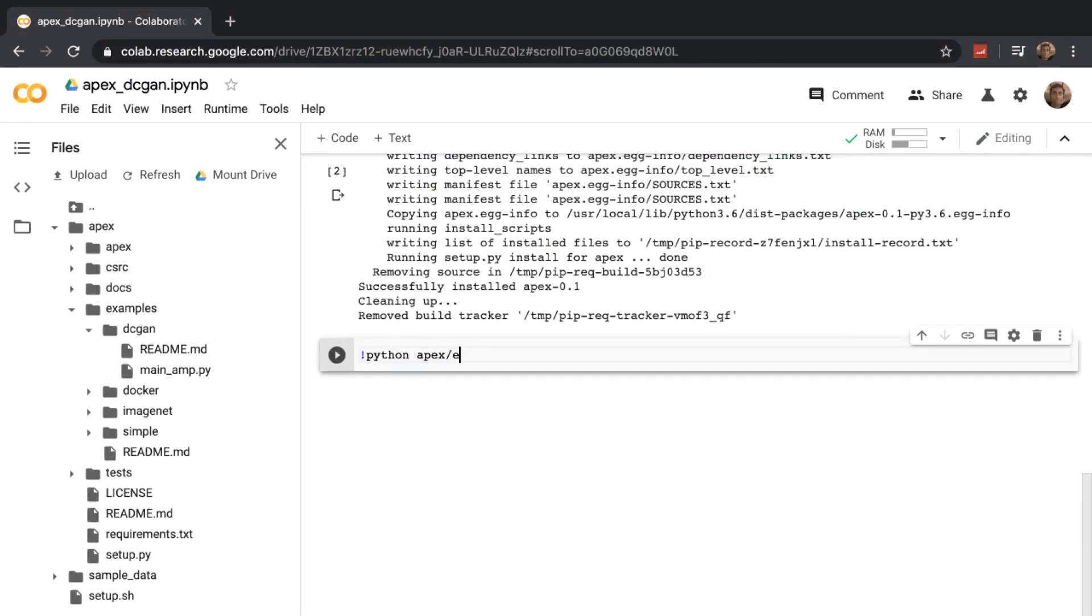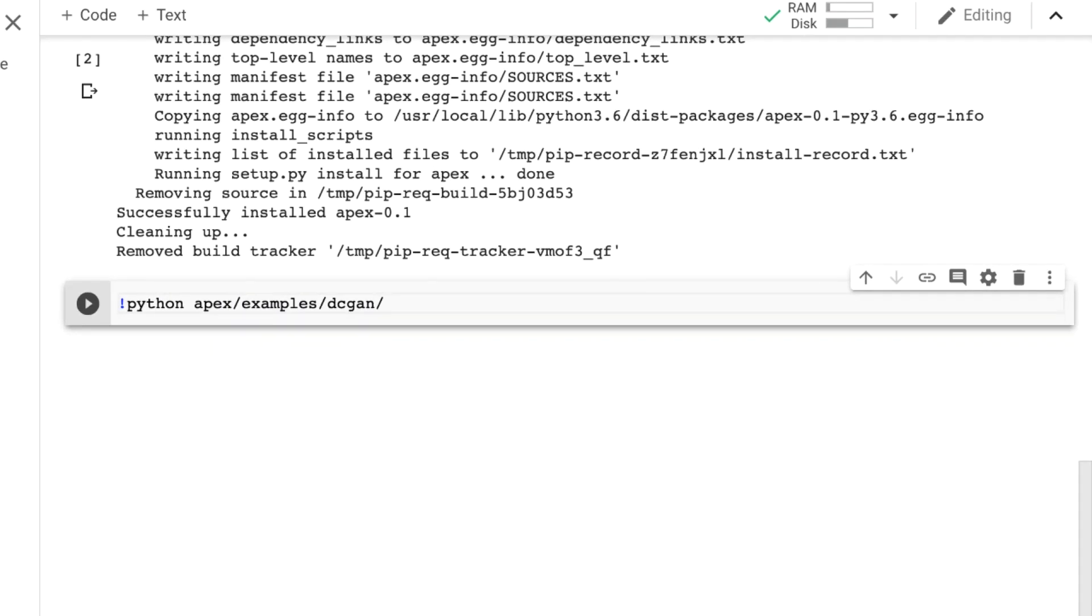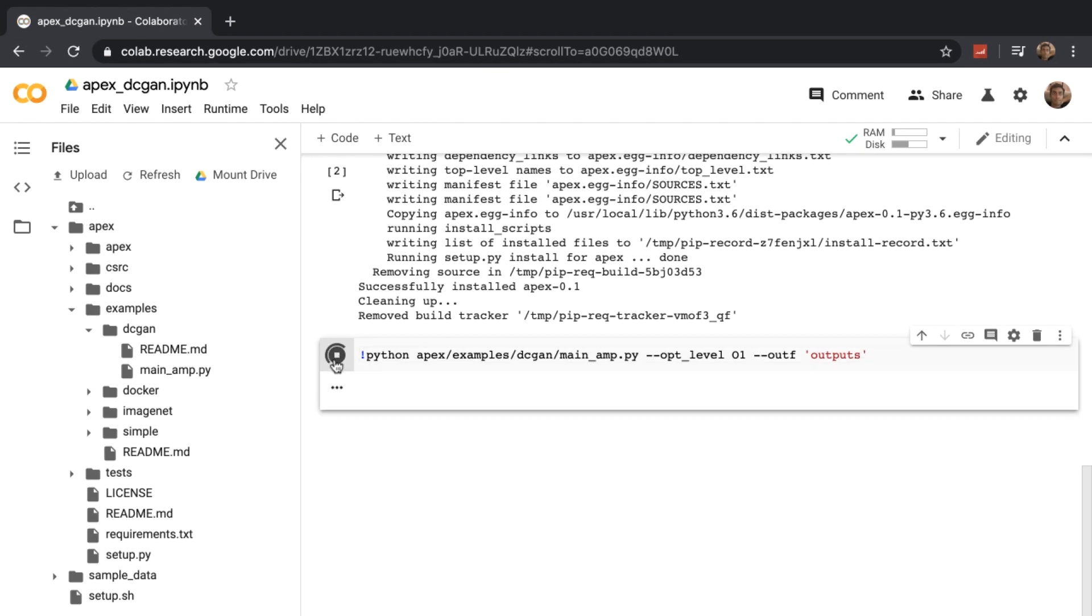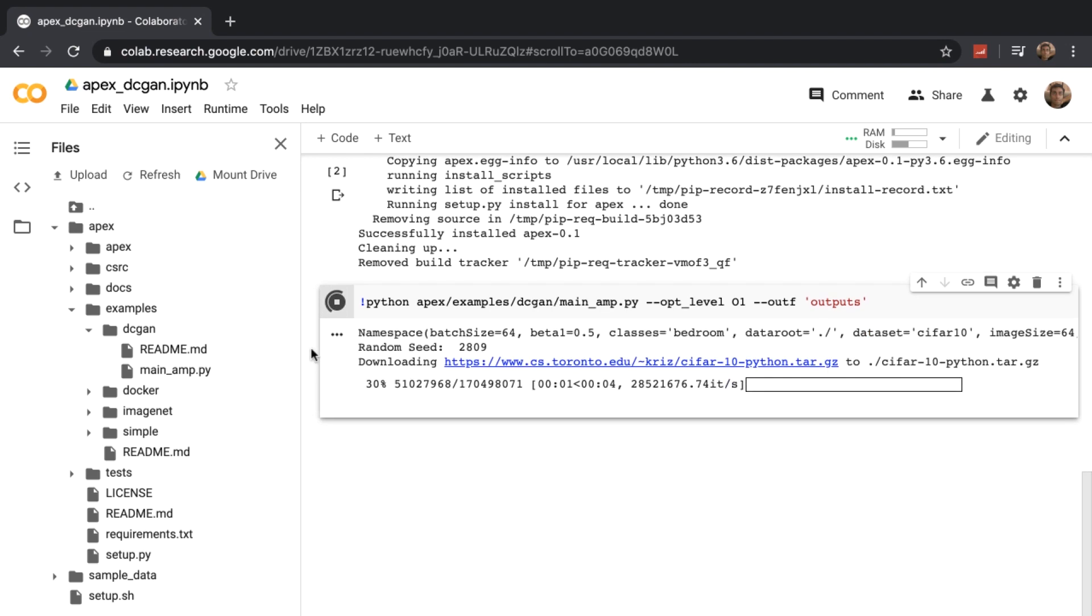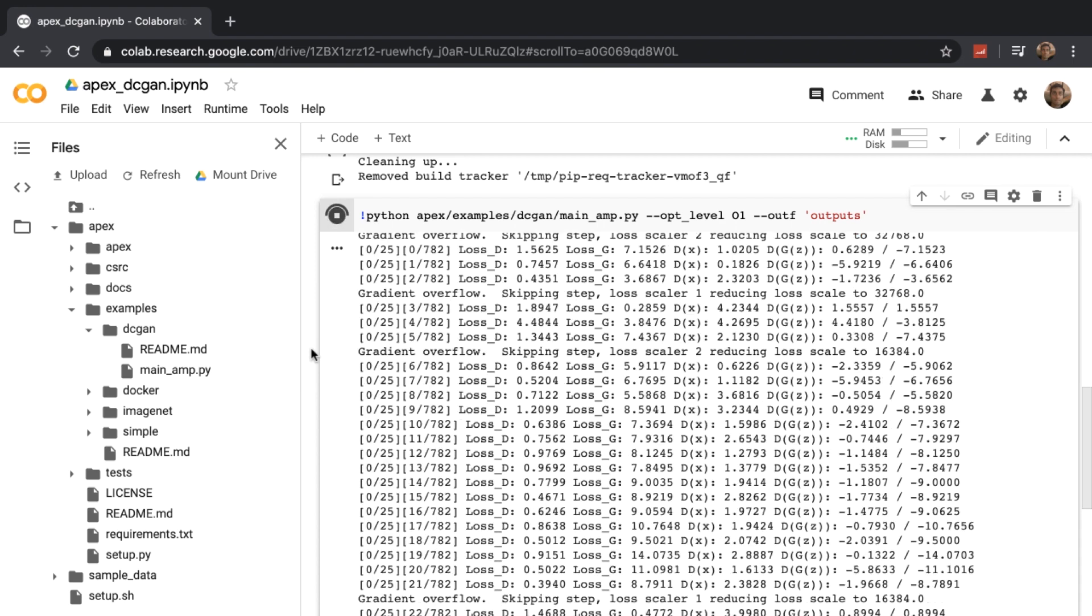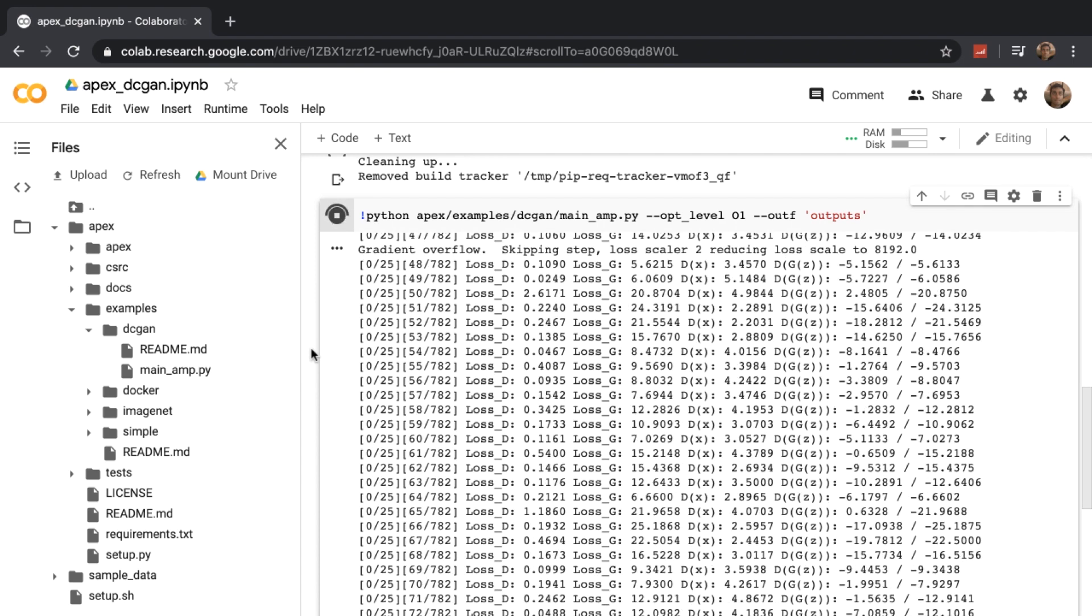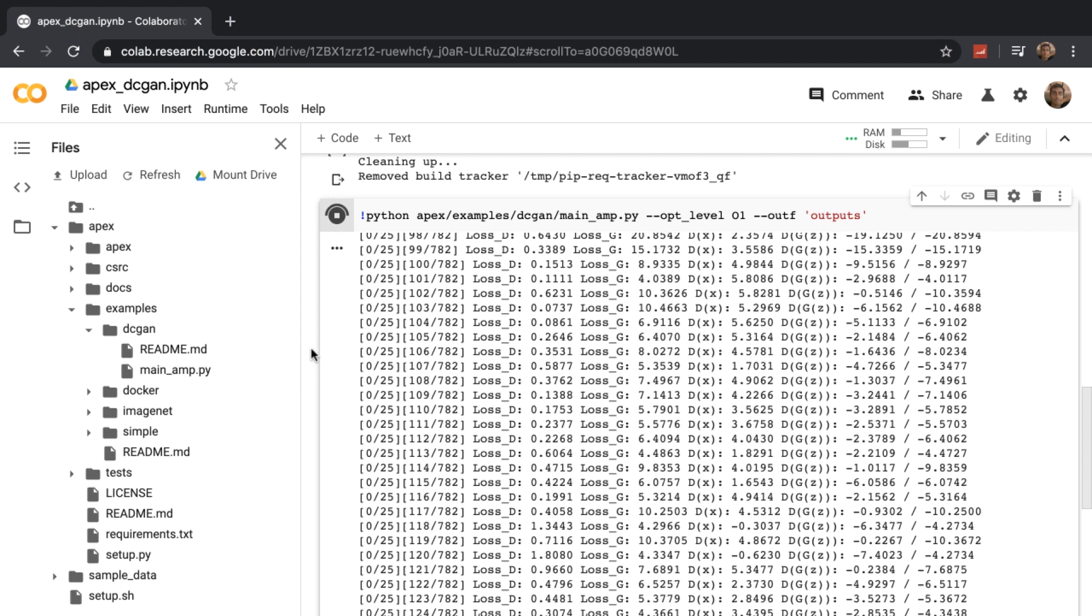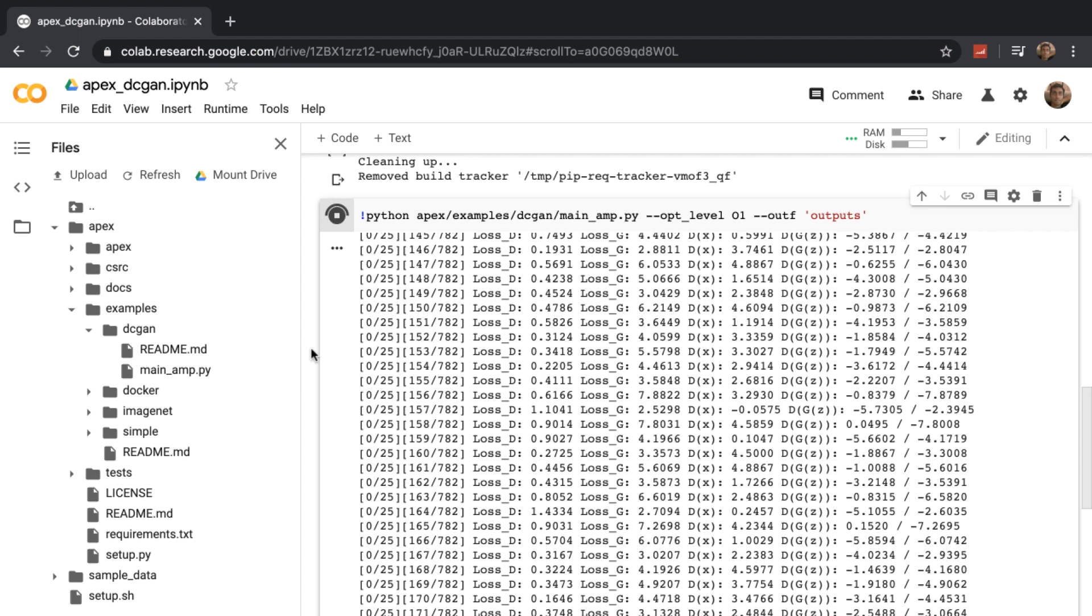Let's run this file, passing in a few arguments. The opt_level parameter, we set it to O1 to indicate that we want to use mixed precision. And the outf parameter indicates that I want to dump my output files into the folder outputs. Let's run this and the training of our generative adversarial net begins. Wow, these iterations are pretty fast.